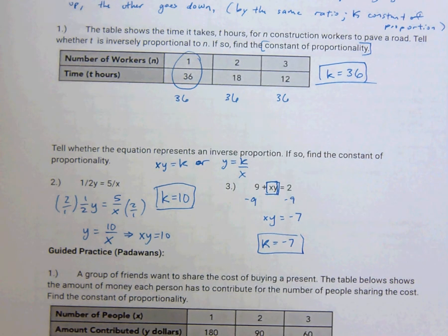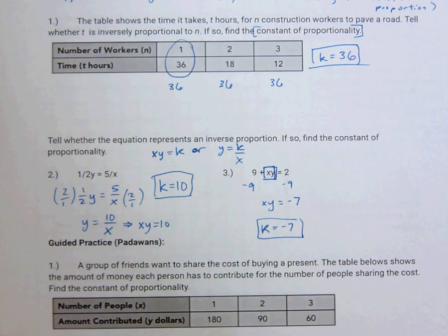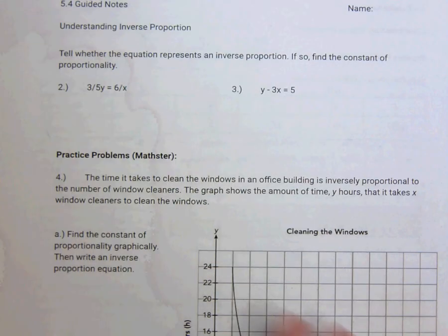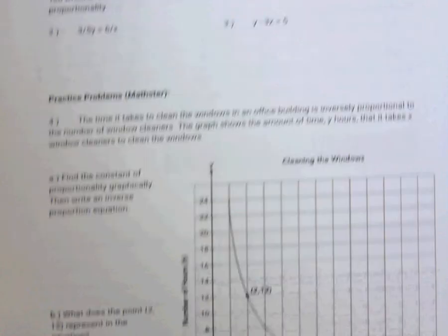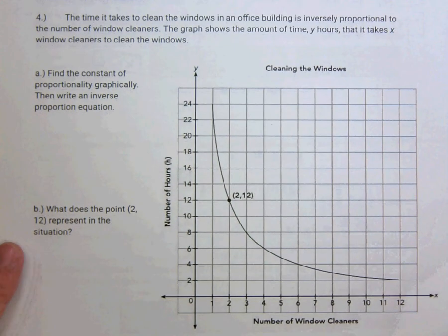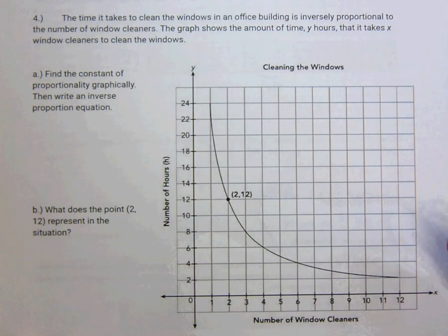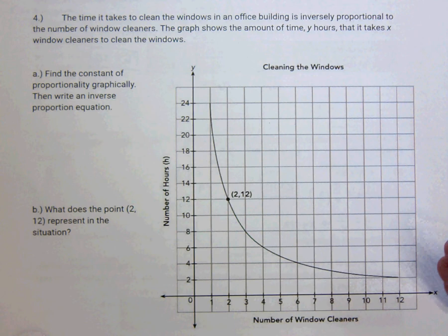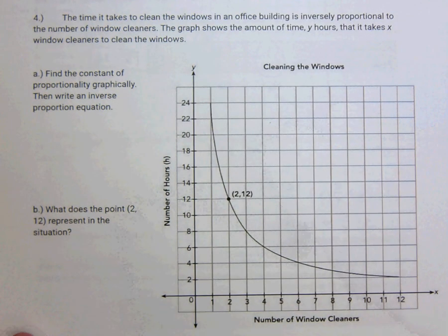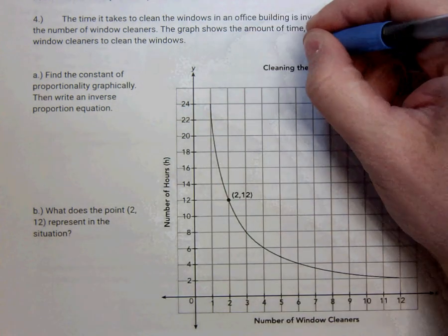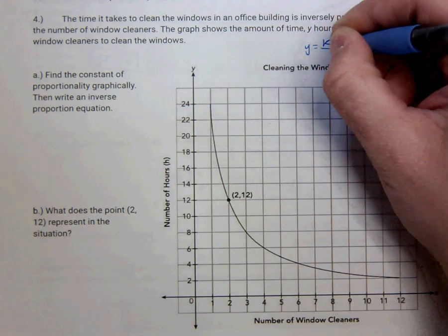So try this one right here. Then on the back, try those two. And I'm going to do this one. So we are working with graphs. Inverse proportion graph. Notice that it's no longer a line. It's kind of this curve. And you don't have to know, it's an... don't worry about it. But this curve is the graph of y equals k over x.